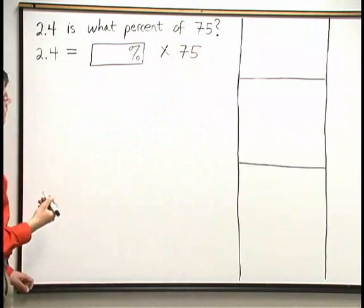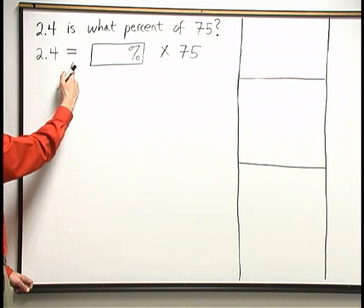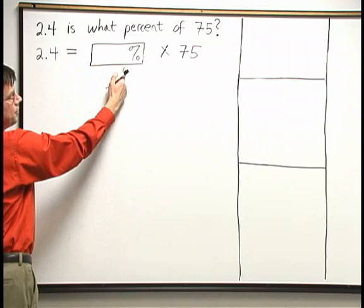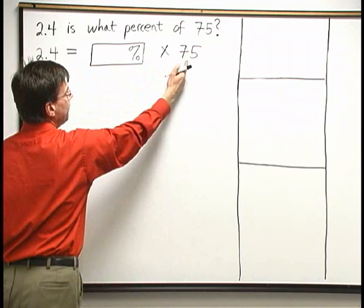So we see here that we have 2.4 equals what percent, or box percent, times 75.